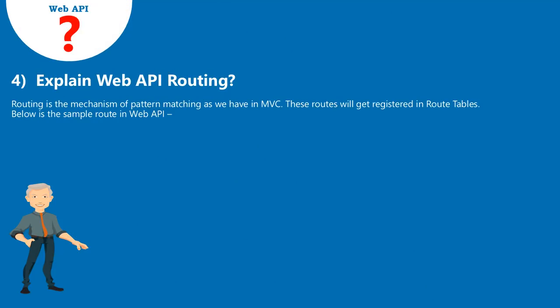Question 4: Explain Web API routing. Routing is the mechanism of pattern matching, as we have in MVC. These routes get registered in route tables. Below is the sample route in Web API.